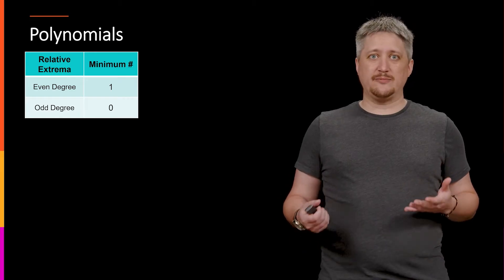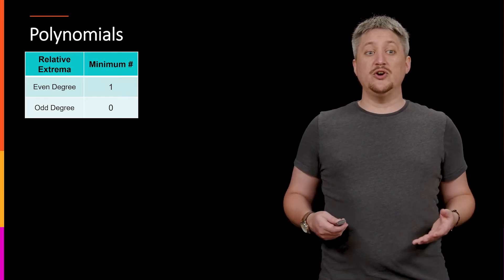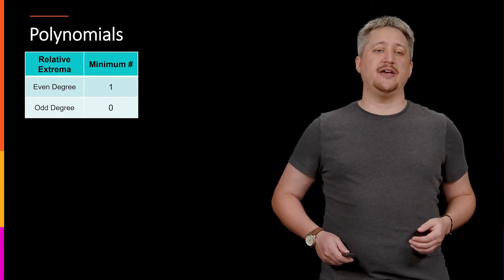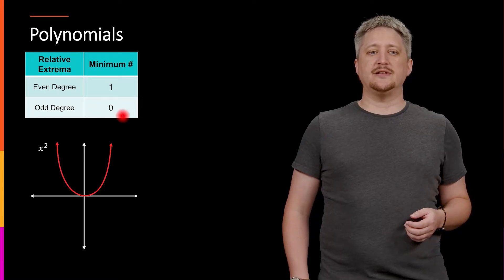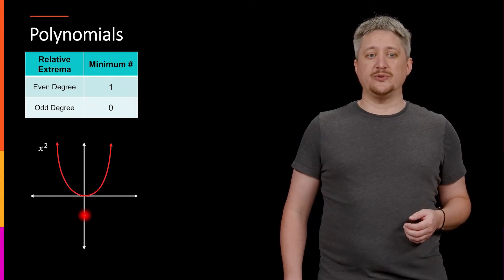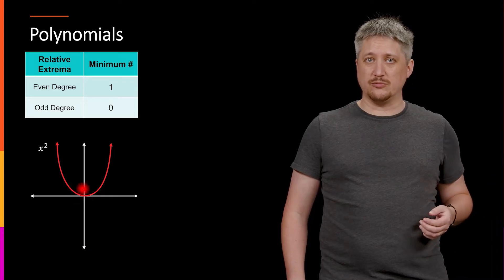And it turns out that absolute extrema also count as relative extrema. So we know as a starting point that if we have an even degree polynomial, something like x squared, then we have at least one relative extrema, which is basically the absolute extrema.